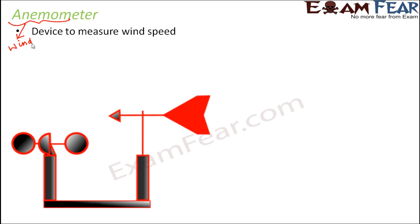Roughly this is how an anemometer looks like. However, there are many different varieties of anemometer and they have different structures. But basically what they do is they have three cups which spin in wind. Here you can see these are the three cups — one, two and three. It is like three similar structures which are arranged and it is capable of rotating.